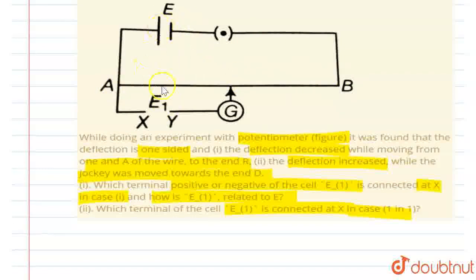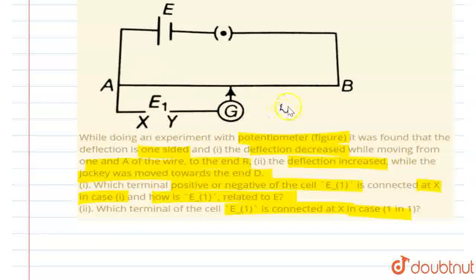One is E, the primary battery, and E1 is the secondary battery. The primary cell is in the lower circuit. E1, what you see here, is also referred to as a primary cell connected with a secondary circuit on the top part.